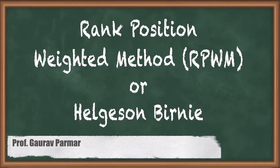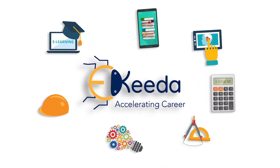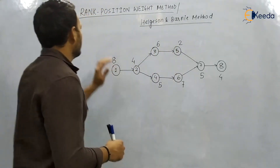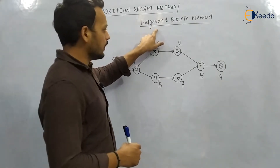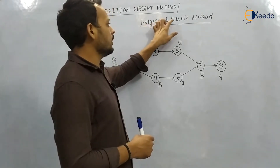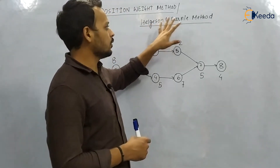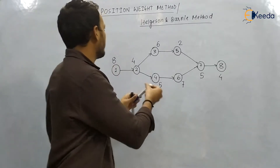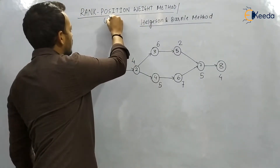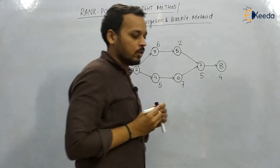Hello friends. In this lecture we will see one of the important methods of assembly line balancing — the Ranked Position Weight Method, also known as the Helgesen and Burin Method. These are the names of two scientists who developed this method. It is also written in short as RPWM.